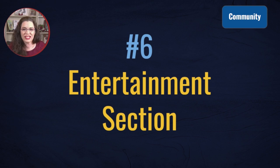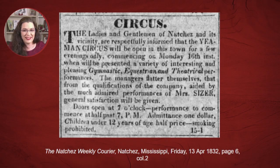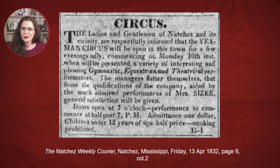Some professional genealogists specialize in writing narratives about your ancestors. One fantastic selection to add context to your ancestor's story is to search the entertainment section. Unless your ancestor was an entertainer, this section will surely be just for historical context. For instance, if your ancestor lived in Natchez, Mississippi in 1832, you can see that a circus was coming to town. Notice the type of entertainment activities included in such a performance. Pay attention to the cost of attendance. If your ancestor had children, I'm sure that they heard about the circus and begged their parents to go.